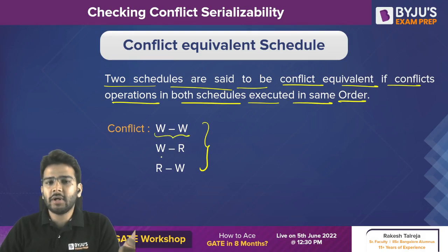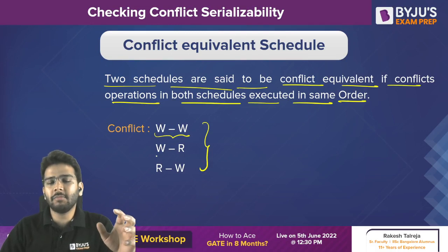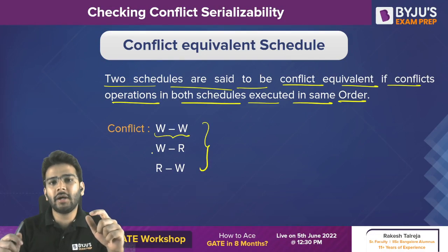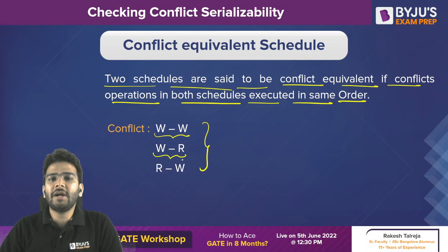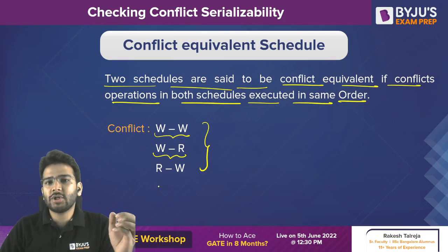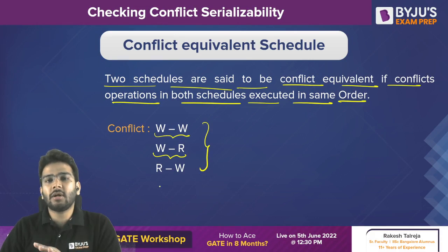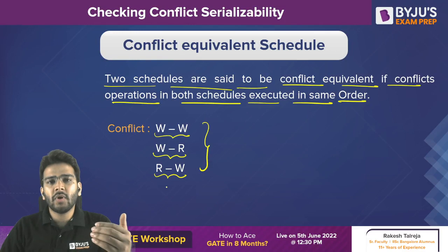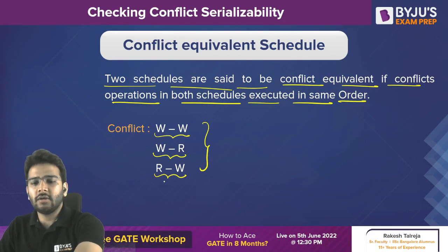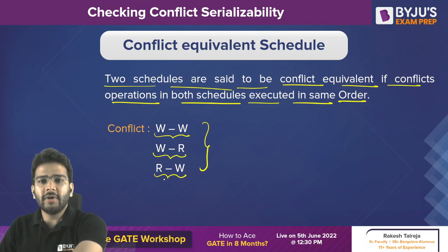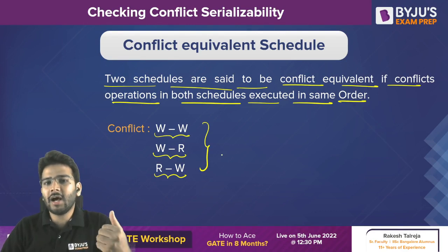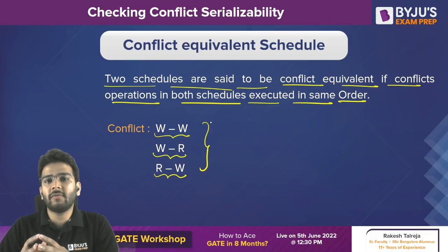The first is a write-write conflict: when one transaction performs a write operation on a data item and another transaction also performs a write on the same data item. The second is a write-read conflict: when one transaction writes on a data item and another reads from the same item. The third is a read-write conflict — the opposite of write-read: one transaction reads a data item and then another transaction writes on that same data item. A conflict is only possible when operations are performed on the same data item by different transactions.